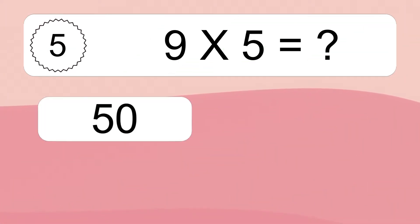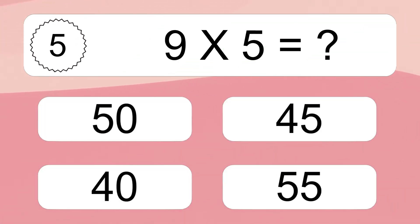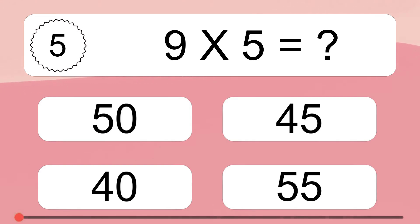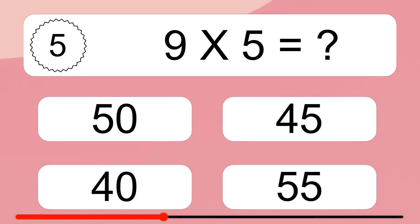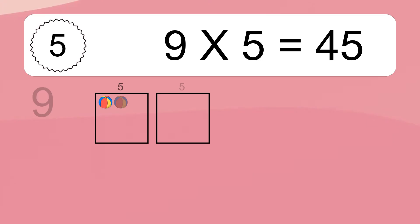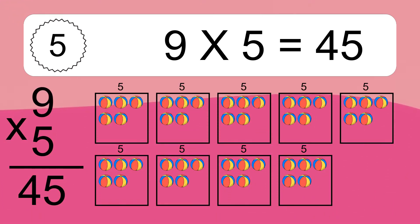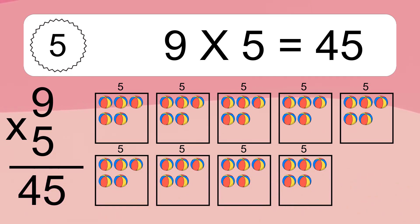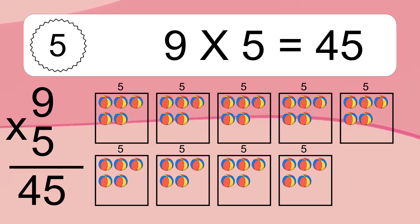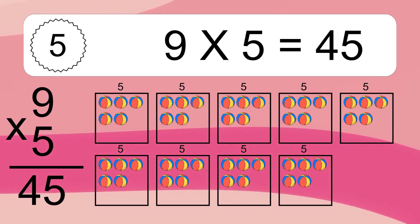Nine times five equals what? Nine times five equals forty-five. We have nine boxes and each box has five colorful balls inside. If you count all the balls in all the boxes together, you will have nine times five balls. This equals forty-five balls.